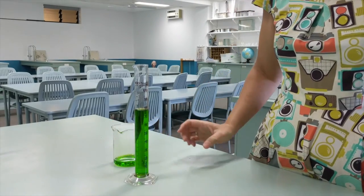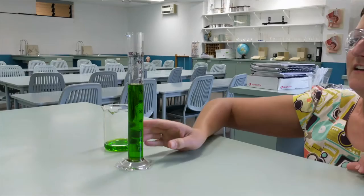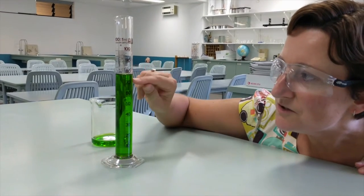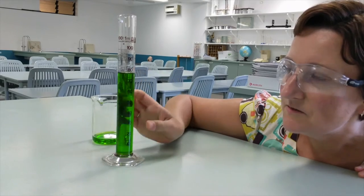Now we need to fine tune that volume. In order to do that we need to get down to eye level. We need to make sure the bottom of the meniscus is lined up with the scale mark of the volume that we want.